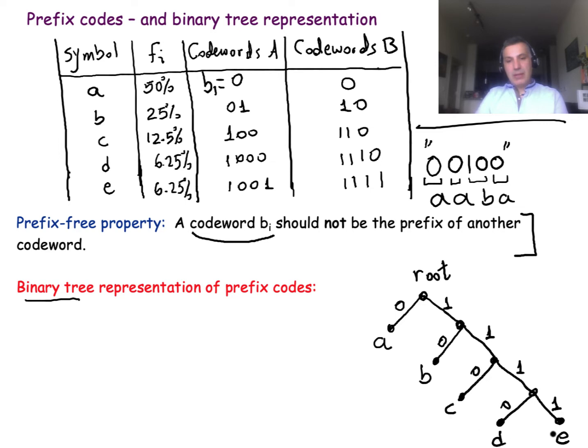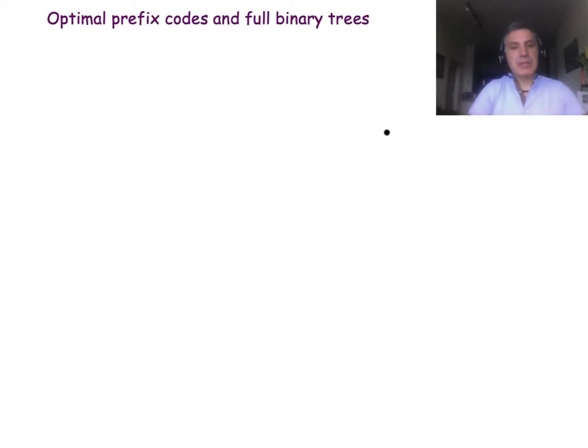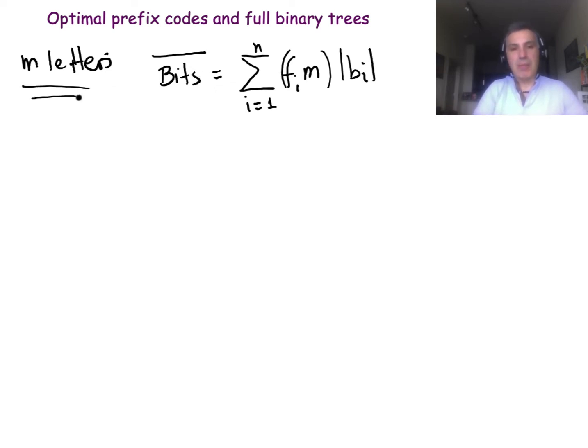This representation, the binary tree representation, clearly satisfies the prefix-tree property because the letters of the alphabet are always leaves in the tree. Now that we know how to represent prefix codes with binary trees, let's go back to the optimization problem that we have. So remember we had a text of m letters. This was the expected number of bits that we need in order to transmit a message with m letters using our alphabet of these n symbols and with codewords bi.